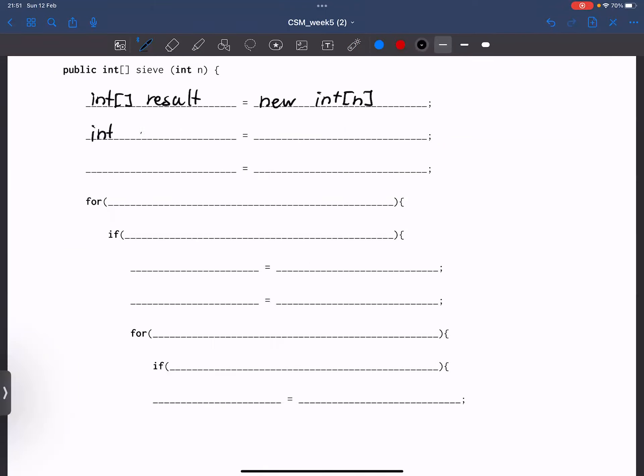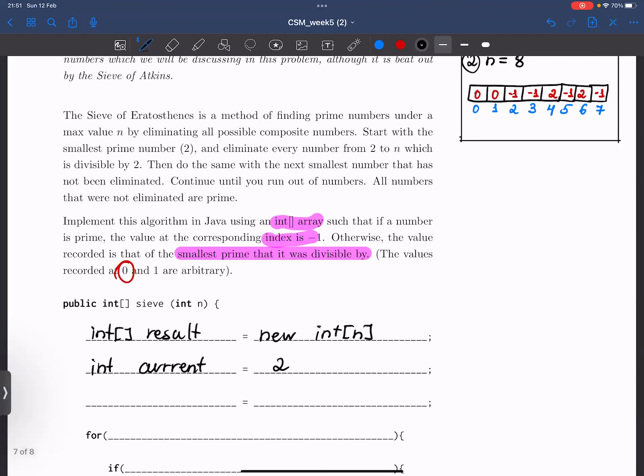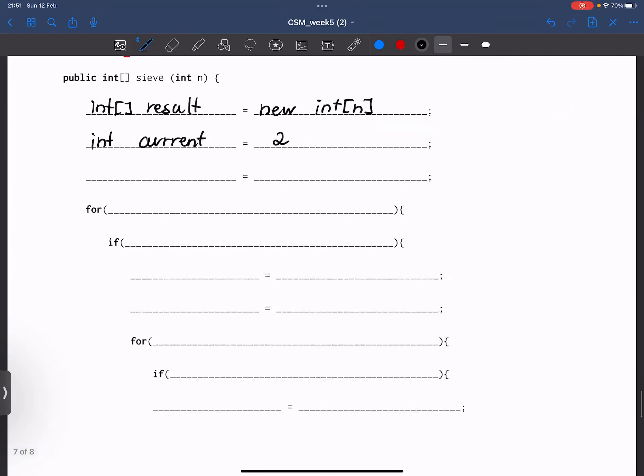The next line will create an integer, which we'll call current. And of course, it will denote the current number that we are on. And the problem says that we're going to start with the first prime number, 2. So let's do just that. The next line in the solution is actually not needed, so feel free to ignore it.